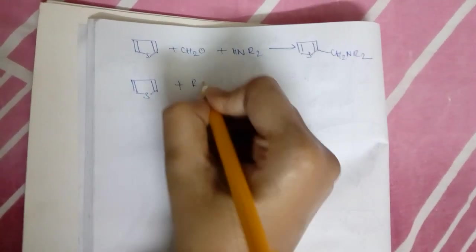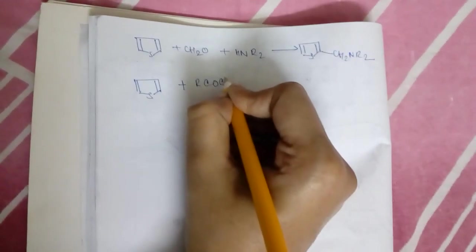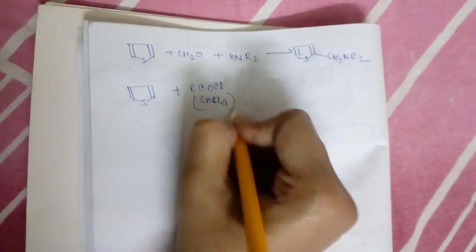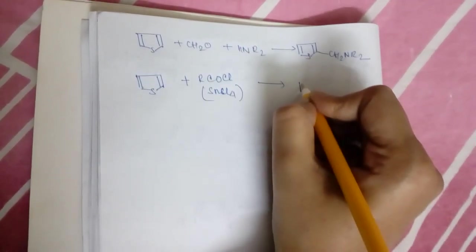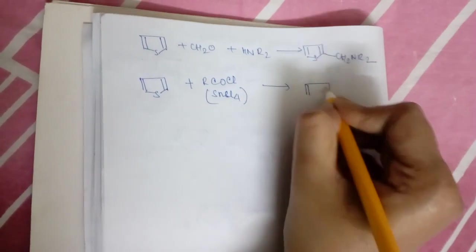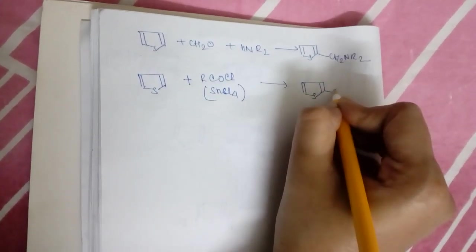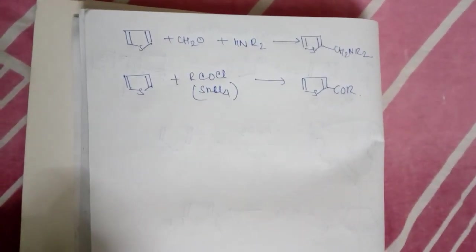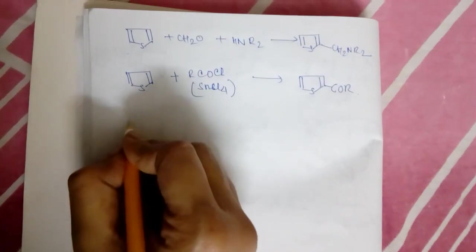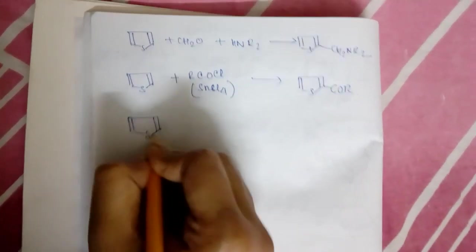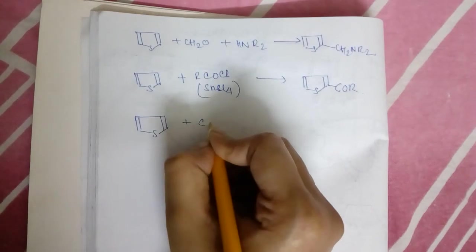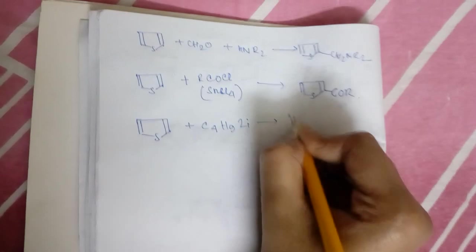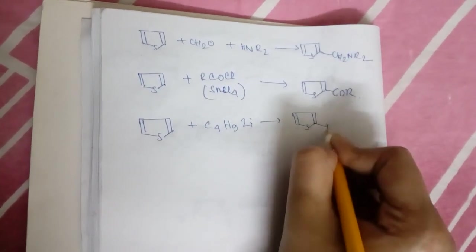It also gives acylation or alkylation. By reaction of thiophene with RCOCl in SnCl4 medium, it will give us acylated thiophene with acyl group attached in the one position like this.